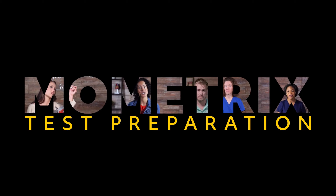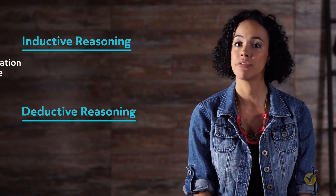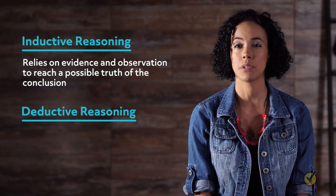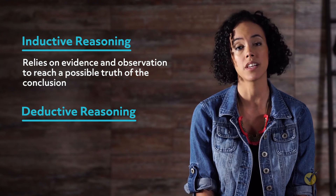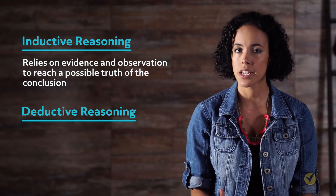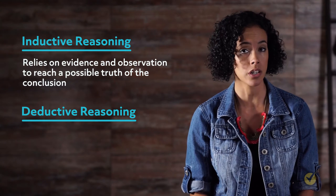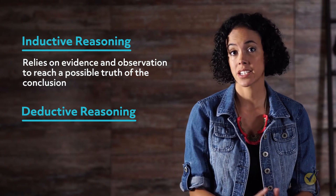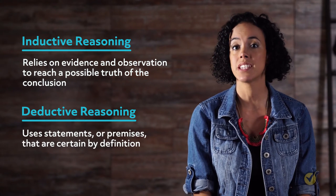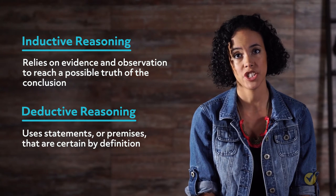Hi, and welcome to this video on inductive and deductive reasoning. There are two basic styles of reasoning used to construct an argument or to reach a conclusion about the way things are: inductive and deductive reasoning. Inductive reasoning relies on evidence and observation to reach a possible truth of the conclusion. We say possible truth because inductive conclusions are not certain, only probable. Deductive reasoning, on the other hand, uses statements or premises that are certain by definition.